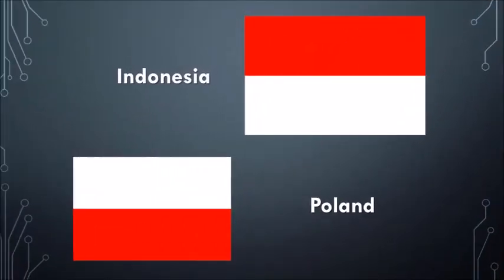In this slide you see the Indonesian flag at the top right with two horizontal rectangles — one red at the top and one white at the bottom. You can also see the Polish flag at the bottom left with two horizontal rectangles — one white at the top and red at the bottom. Did you notice that the only difference between these two flags is the order of the colors?